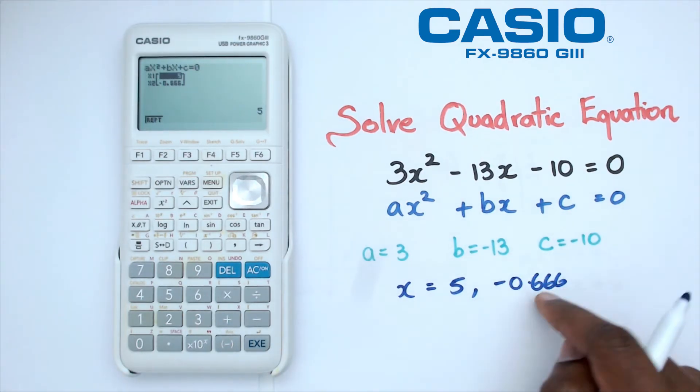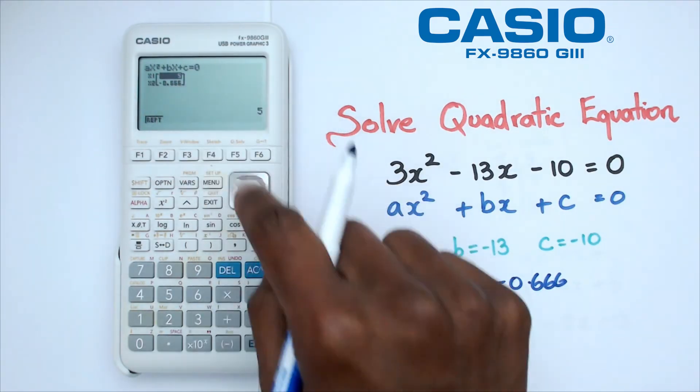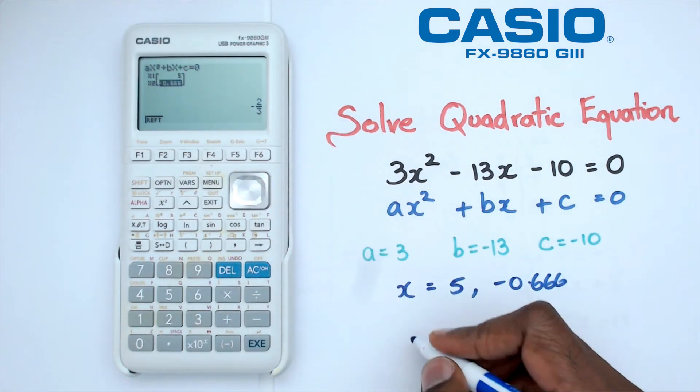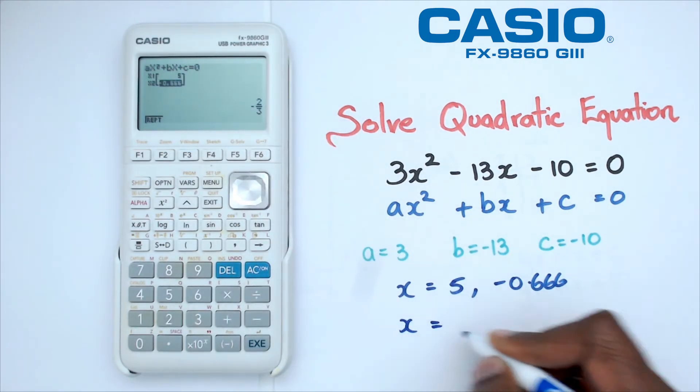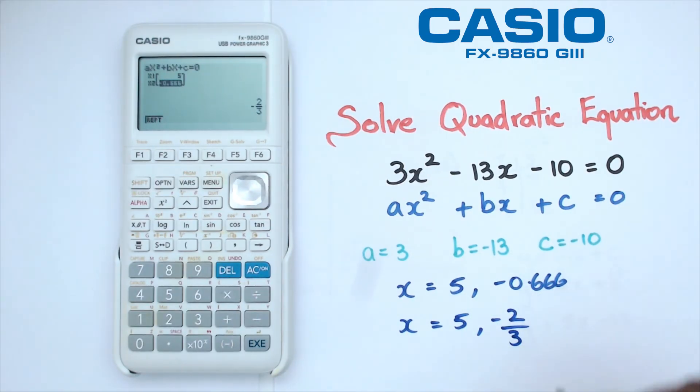Now in some cases you want this number to be a fraction. What you can do is if you move the cursor down to that answer, it's actually going to give you what it is as a fraction. So you could write this answer as x equals to 5 or negative 2 thirds.